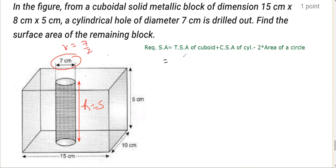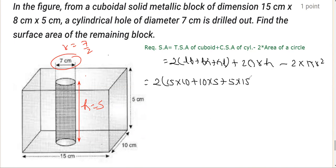Now if I place these values, the total surface area of a cuboid is 2(lb + bh + hl), plus the curved surface area of cylinder which is 2πrh, minus 2 times area of a circle which is πr². In the next step, I'll plug in these values: length is 15, breadth is 10, h is 5. We can take 2πr common, so we are left with h minus r.